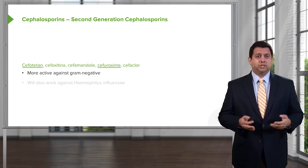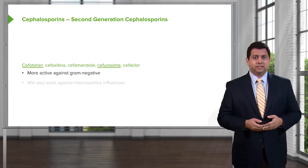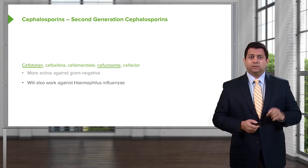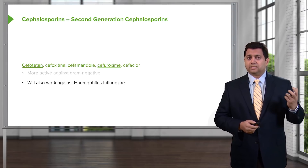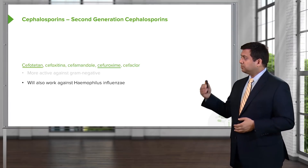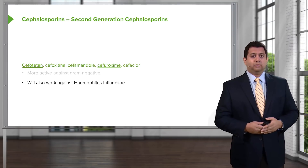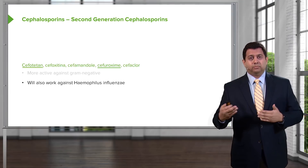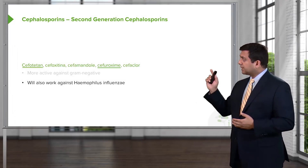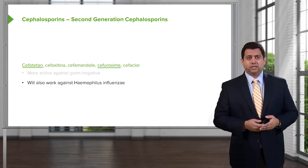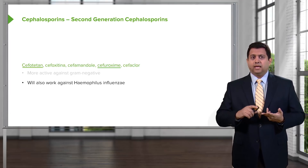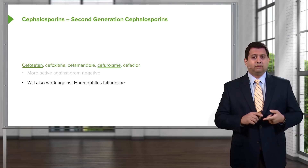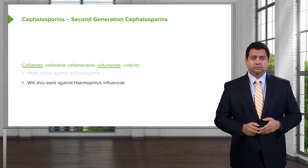The second generation prototypical agent is cefotetan. These are much more active against gram-negative bacteria, and they'll often also work against Haemophilus influenzae, which is one of the major causes of pneumonia. Other agents in this group include cefuroxime. Cefotetan and cefuroxime are the drugs you need to know. Cefuroxime is commonly used in pneumonia treatment.